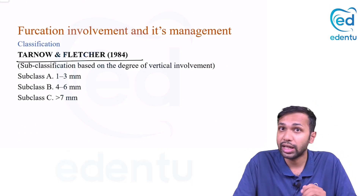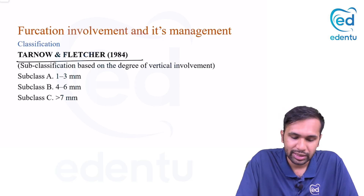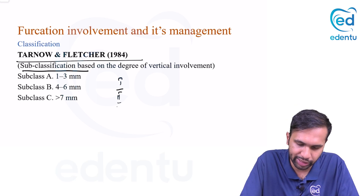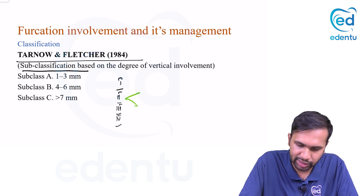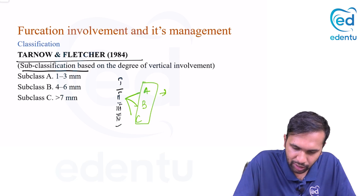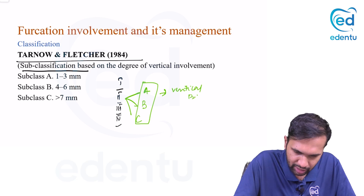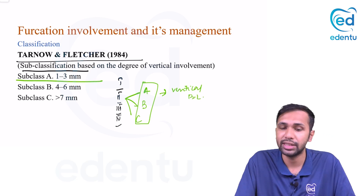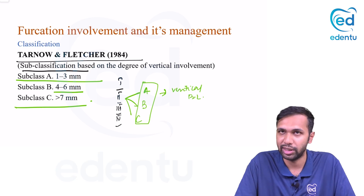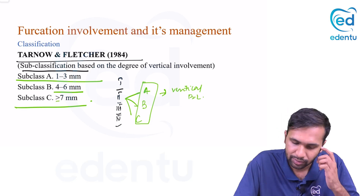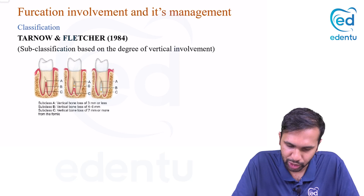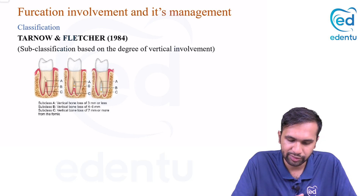To compensate for this drawback, Tarnow and Fletcher in 1984 did not give a new classification — they subclassified Glickman's classification into three subclasses: A, B, and C, based on the amount of vertical bone loss. Subclass A has vertical bone loss of 1–3 mm, subclass B has 4–6 mm, and subclass C has more than 6 mm (i.e., ≥7 mm).